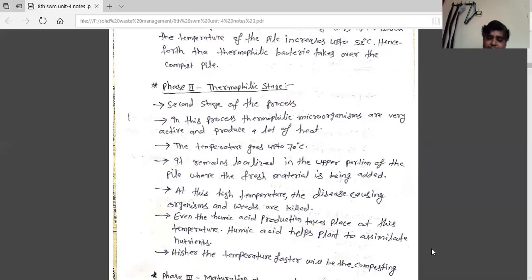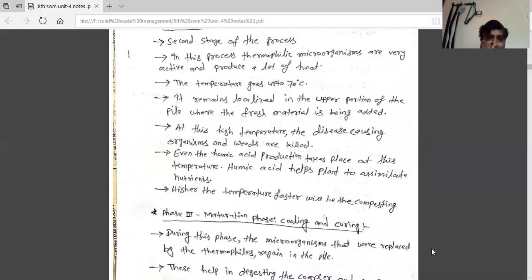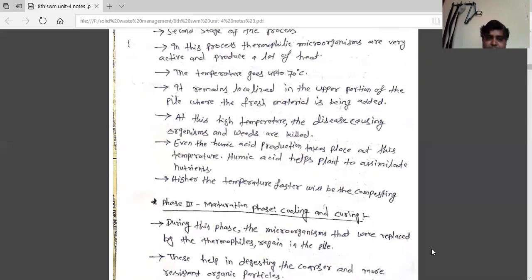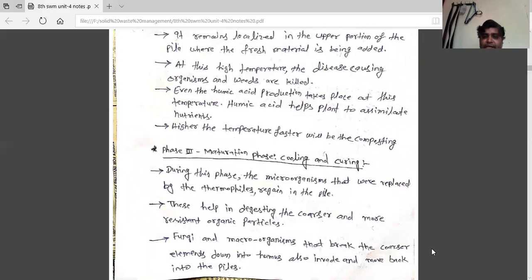At this high temperature, disease-causing organisms and weeds are killed. Even humic acid production takes place at this temperature, which helps plants assimilate nutrients. The higher the temperature, the faster will be the composting.